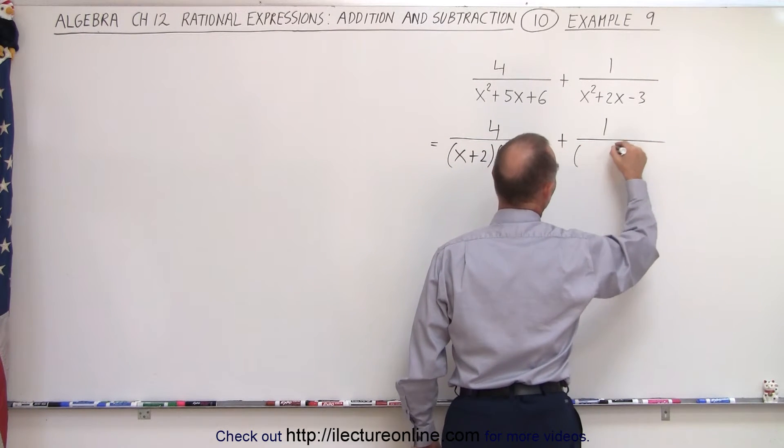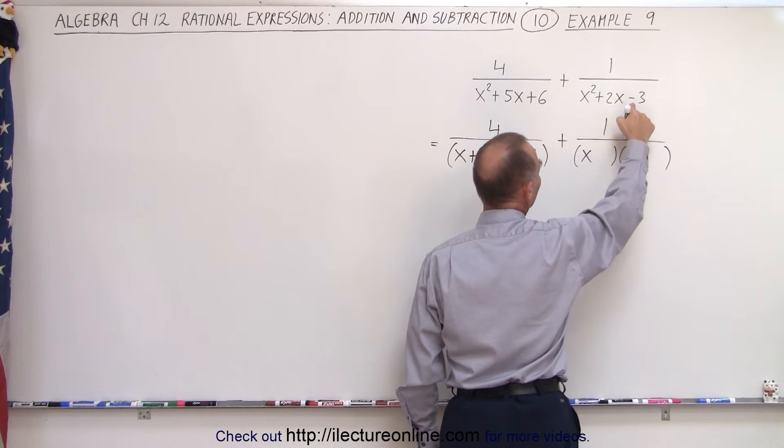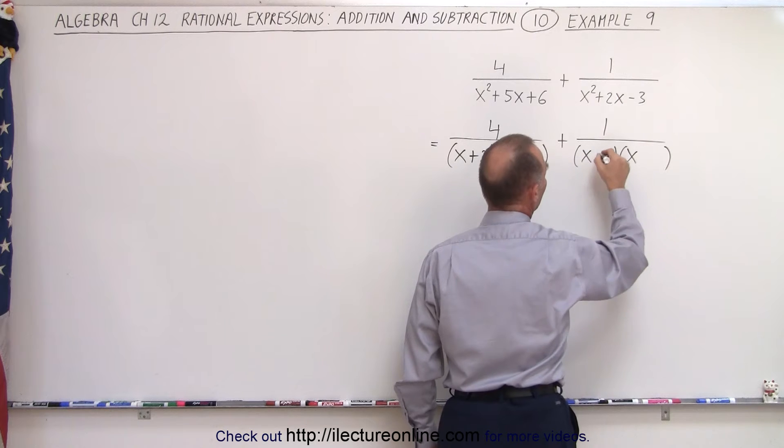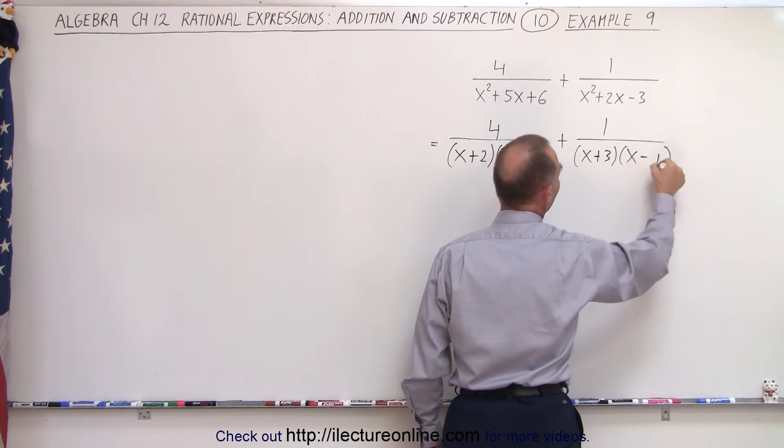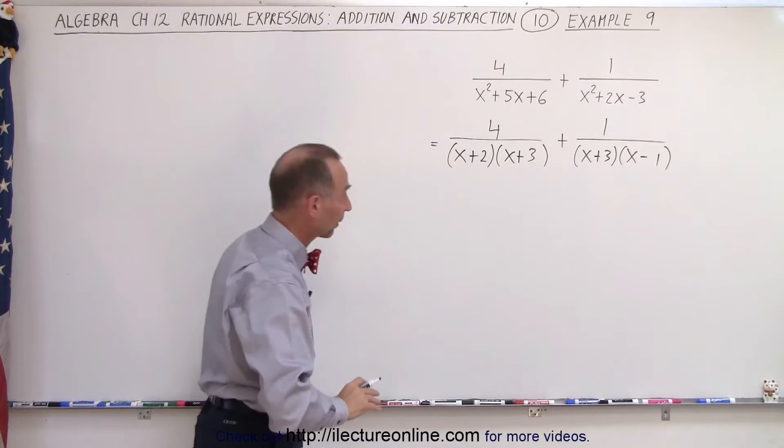Same with the second fraction. Here we have again two binomials, we need an x and an x. Notice that one number must be negative, the other must be positive. How about plus 3 minus 1, because when we add them we get plus 2, when we multiply we get minus 3, so that seems to work.